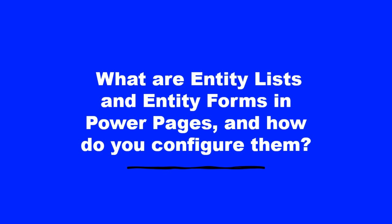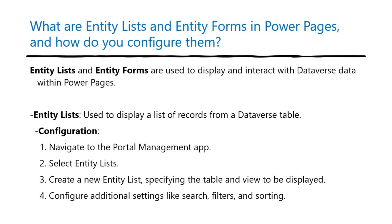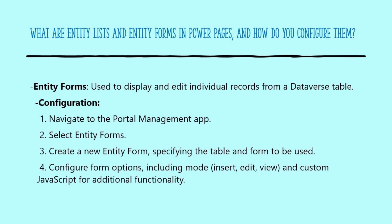What are entity lists and entity forms in Power Pages, and how do you configure them? Entity lists and entity forms are used to display and interact with Dataverse data within Power Pages. Entity lists are used to display a list of records from a Dataverse table. Configuration: One, navigate to the portal management app. Two, select entity lists. Three, create a new entity list, specifying the table and view to be displayed. Four, configure additional settings like search, filters, and sorting. Entity forms are used to display and edit individual records from a Dataverse table. Configuration: One, navigate to the portal management app. Two, select entity forms. Three, create a new entity form, specifying the table and form to be used. Four, configure form options including mode — insert, edit, view — and custom JavaScript for additional functionality.